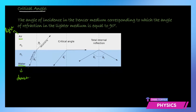As you can see here, we have theta 1, that is the angle of incidence in the first medium. The moment the ray touches the surface it is going to refract and bend away from the normal. So this is your angle of refraction, theta 2.